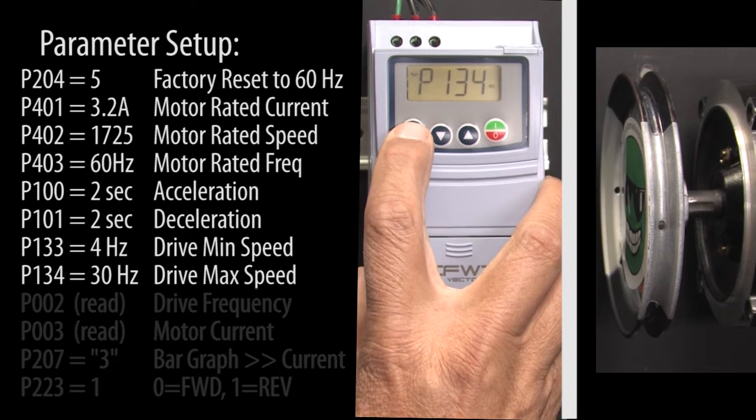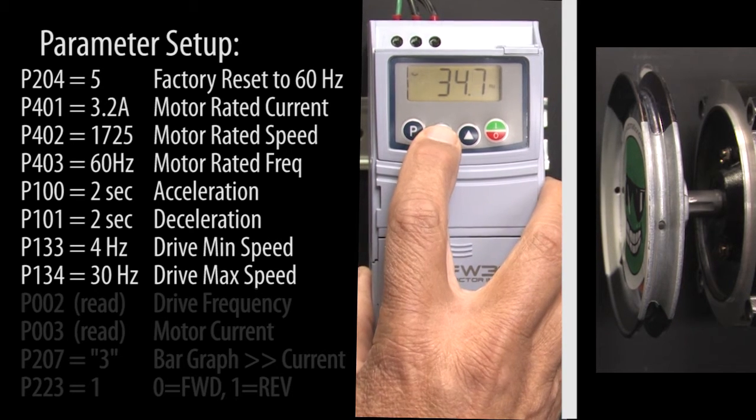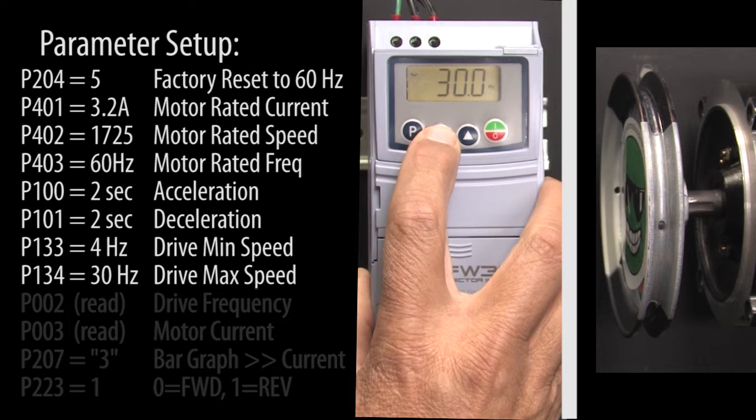Scroll to the max speed parameter, hit P. Let's change our max speed to 30 Hz. Hit P to accept that.